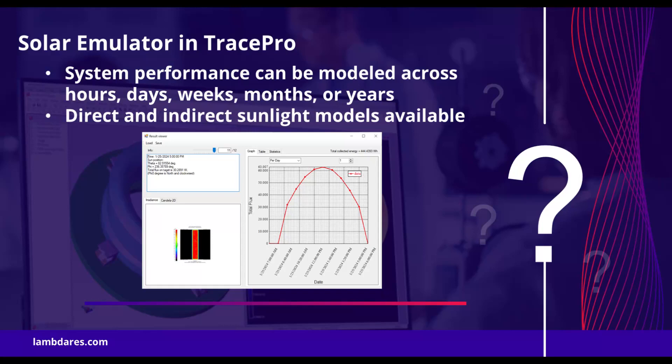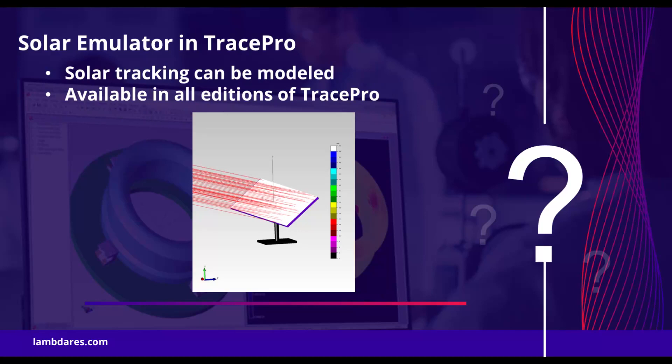The performance of the system can be modeled across hours, days, weeks, months, or even years. Both direct and indirect sunlight can be modeled, and multiple sky models are also included. Solar tracking can also be modeled. The solar emulator is available in all versions of TracePro.